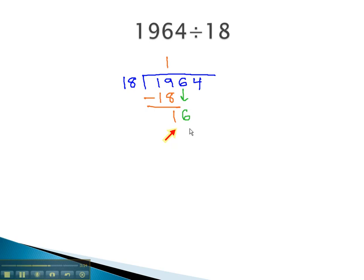None. This is where students often will make the mistake and bring down the 4 and try and pick up from there. However, when we do that, we skip an important step. We haven't acknowledged that 18 goes into 16 zero times.